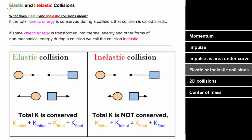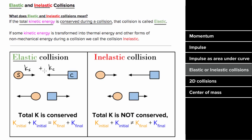What's the difference between an elastic and an inelastic collision? What we mean by an elastic collision is that the total kinetic energy of that system is conserved during the collision. In other words, if a sphere and a cube collide, for that collision to be elastic, the total kinetic energy of the sphere plus the kinetic energy of the cube before the collision would have to equal the kinetic energy of the sphere plus the kinetic energy of the cube after the collision.